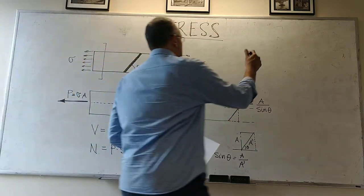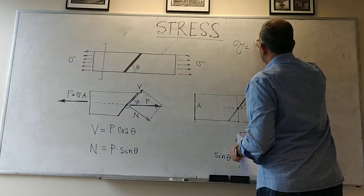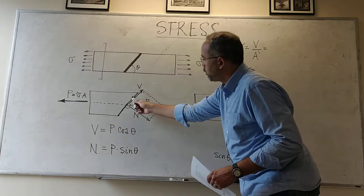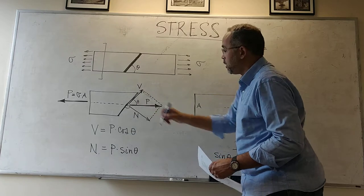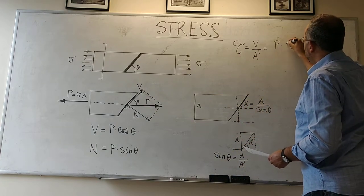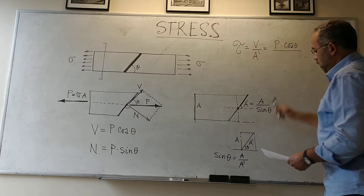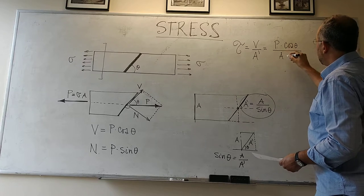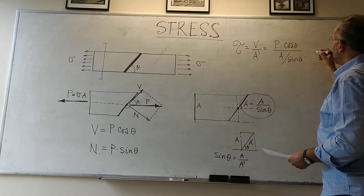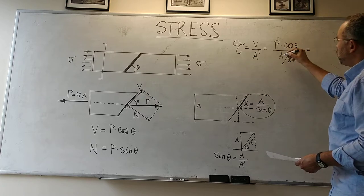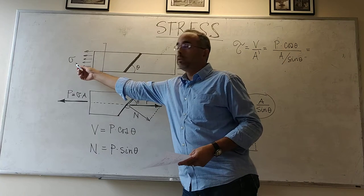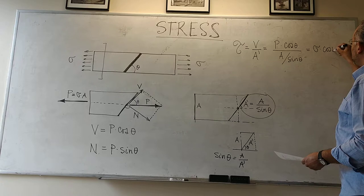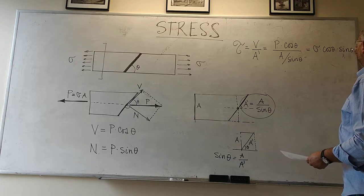The shear stress is V divided by a prime, because that's the surface on which V is acting upon. So we get P cosine of theta divided by a divided by sine of theta, which comes out to P over a. But P over a is sigma, the original stress applied at the end. And so we have sigma times cosine of theta times sine of theta.